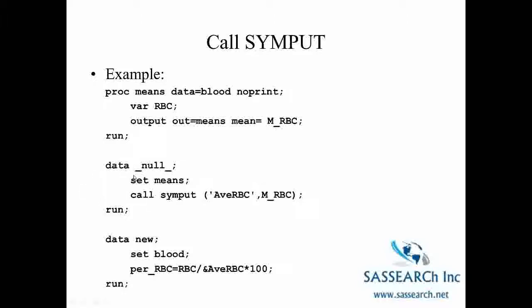Here we have data underscore null underscore and we are bringing in the data set means which just has one observation and one variable. Then we are using this statement call SYMPUT to assign the value of M underscore RBC to a macro variable called AvRBC. This is a macro variable called AvRBC which is the mean red blood cell count of the observations in the data set blood.